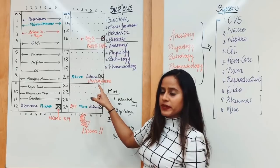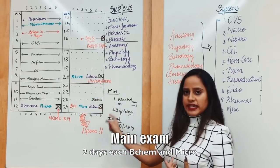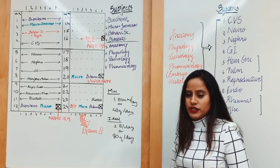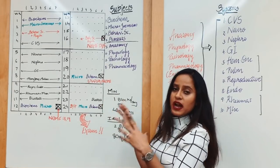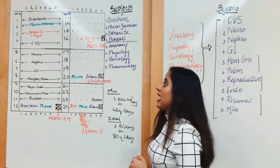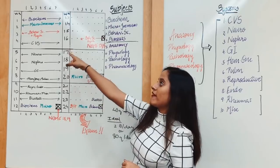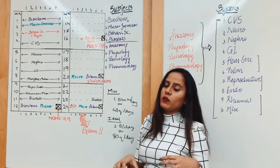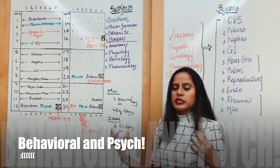Then right before your exam, again two days each of biochemistry and microbiology. Besides these two highly volatile subjects, I also feel—and the reason why it is in red is because behavioral sciences was one of my weaker subjects.